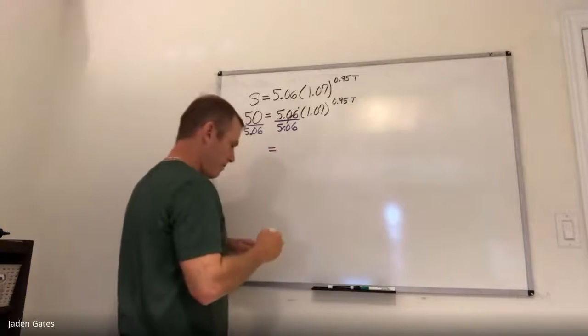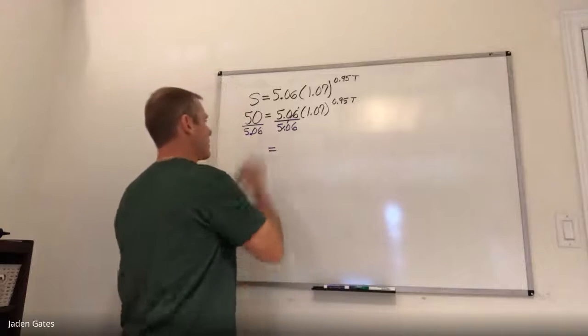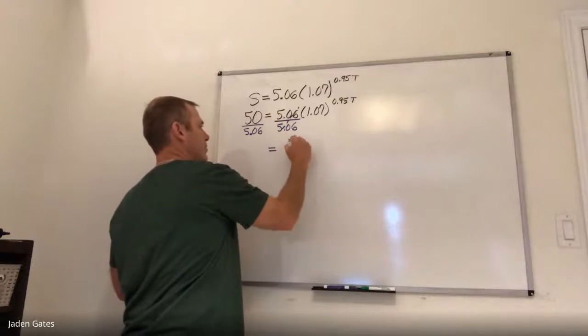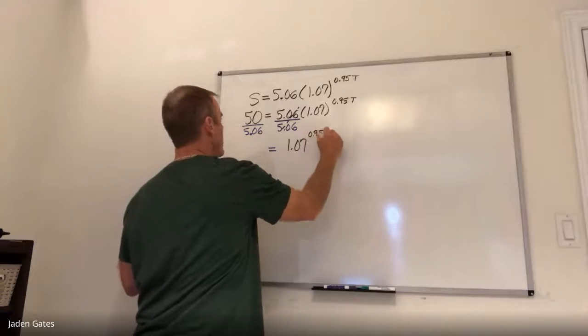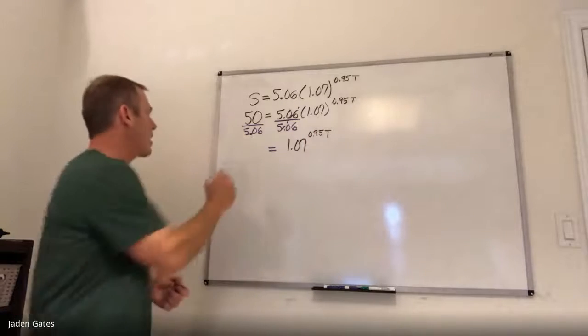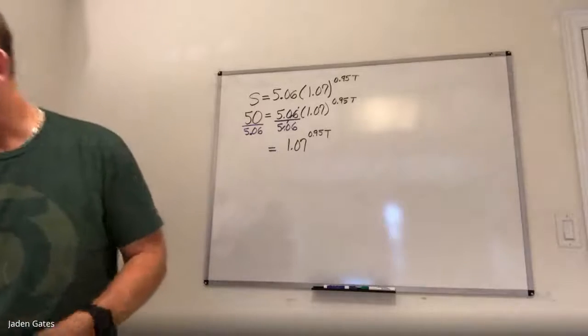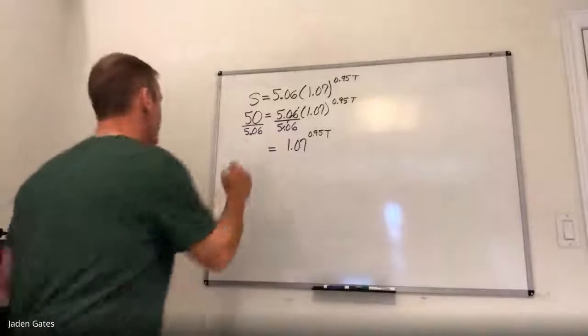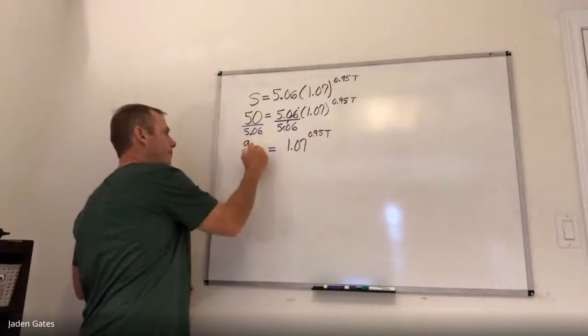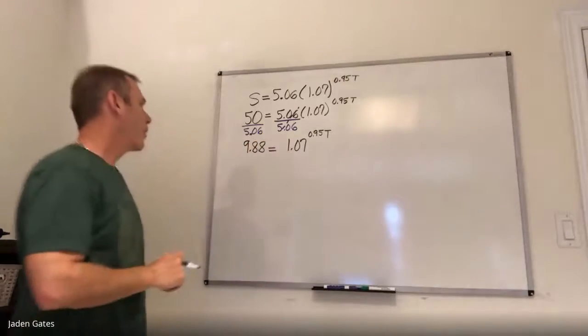So those are gone. On this side here, I have that 1.07 to the 0.95 T. And let's see here. 50 divided. That's got to be 9 something. Let me see. What am I getting? 9.88. Okay.